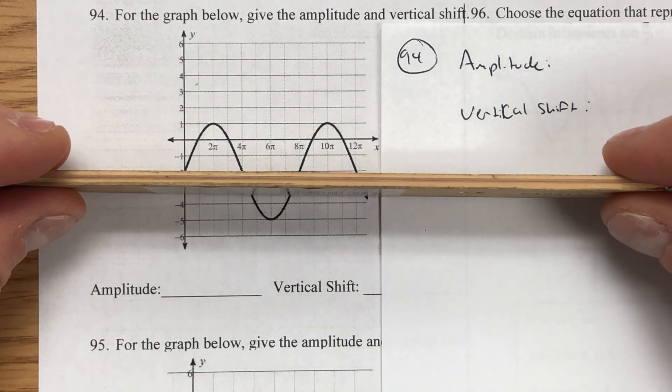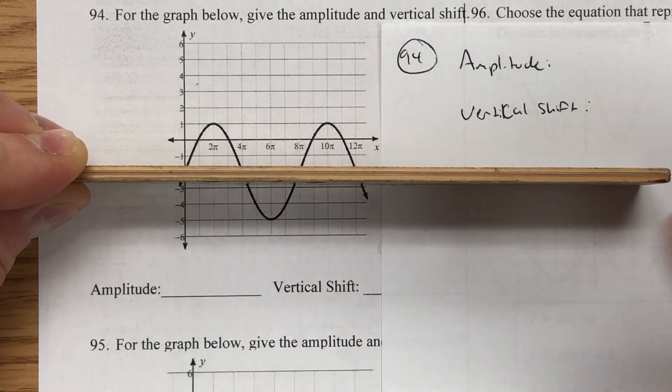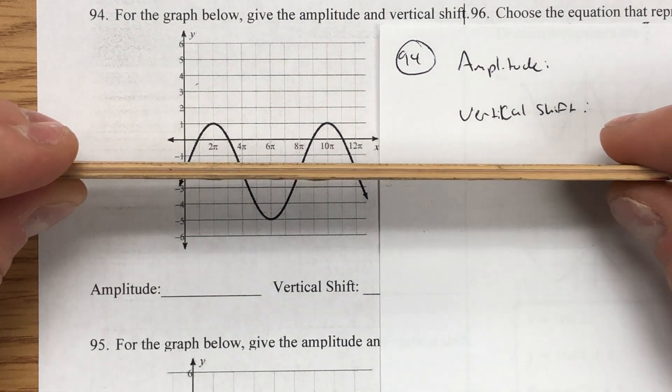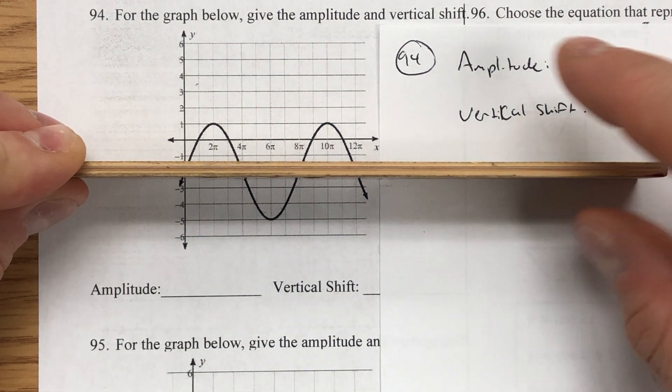If I want to find where the middle of this graph is, the amplitude is either the distance from here to the top or from here to the bottom. It should be the same, thinking of this as the stable point or the middle of the graph.